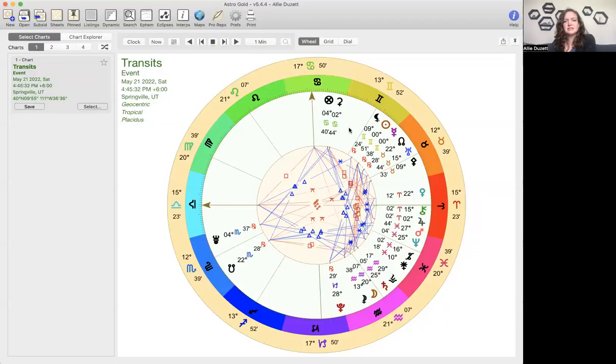Gemini is an air sign, it's very mental, and it's very curious. It's the most curious sign of the chart. Whatever you have in Gemini is going to be curious, curious, curious. It wants to know everything, maybe not be an expert in everything, it doesn't want to go that deep, but it wants to know a little bit about everything.